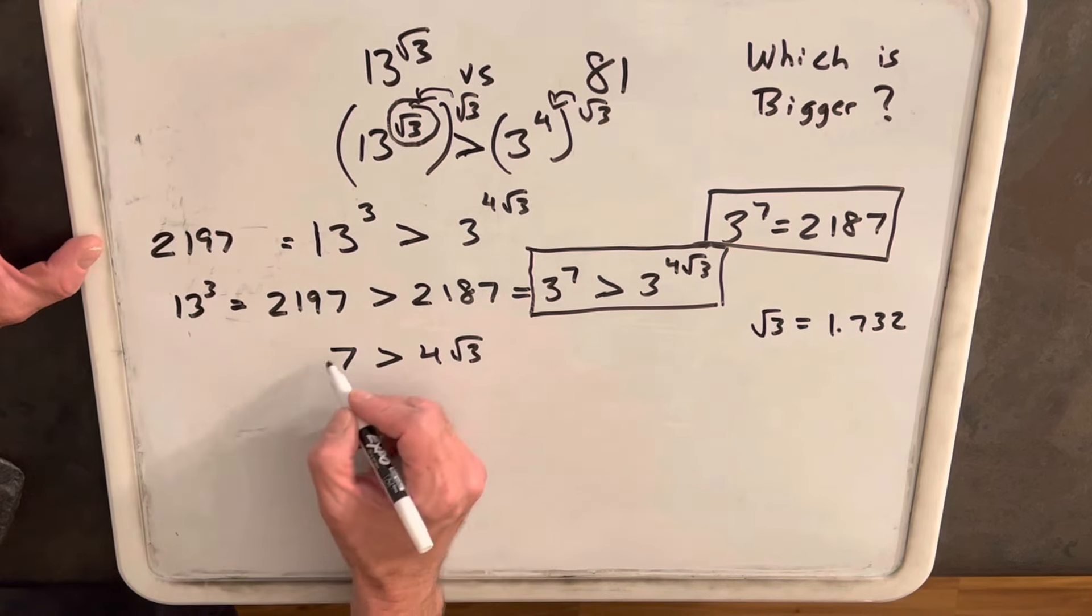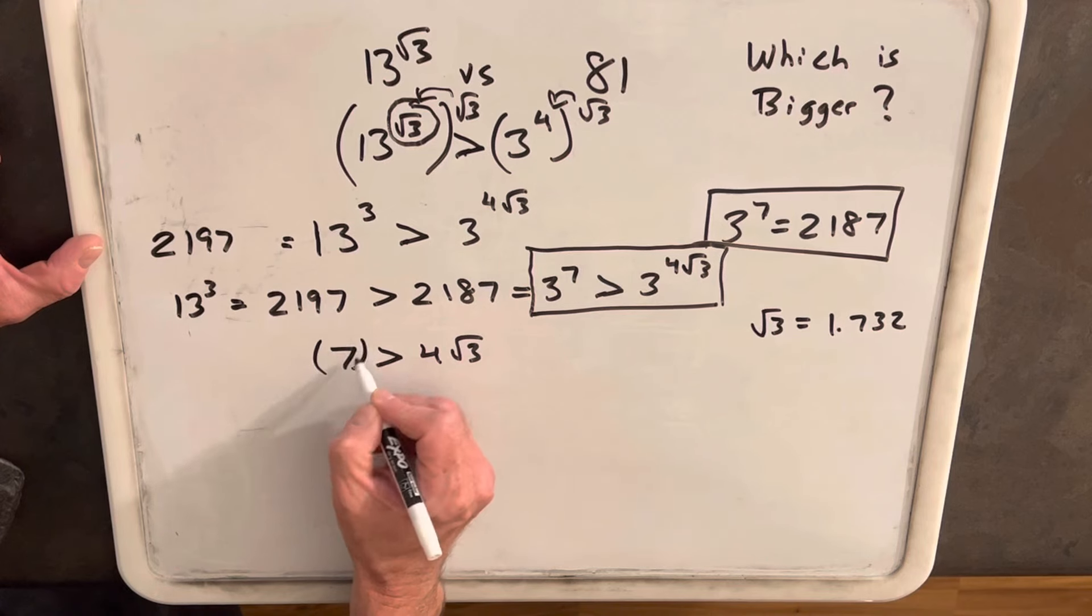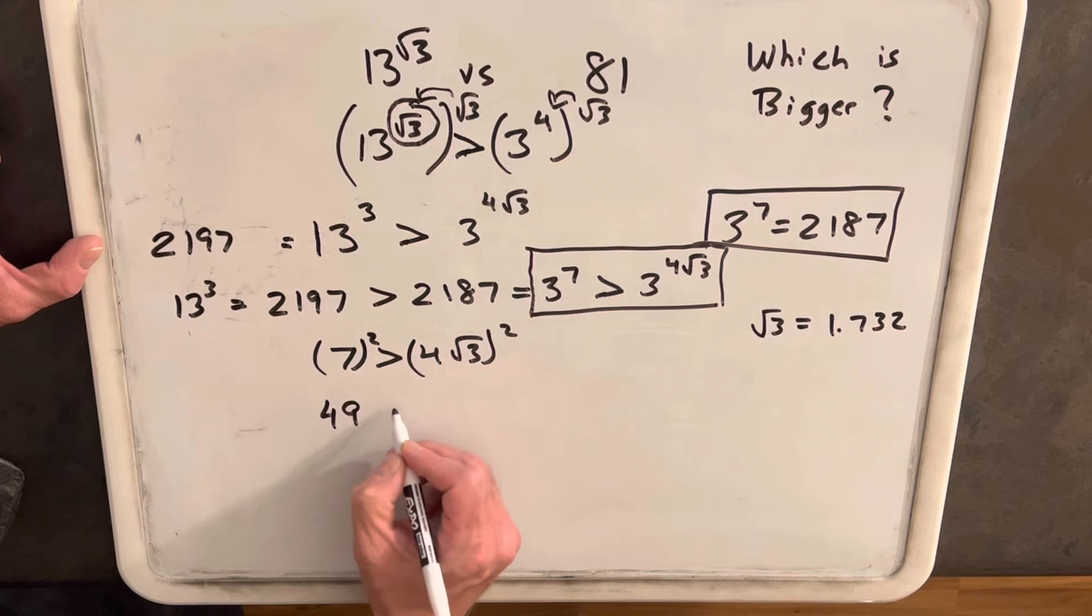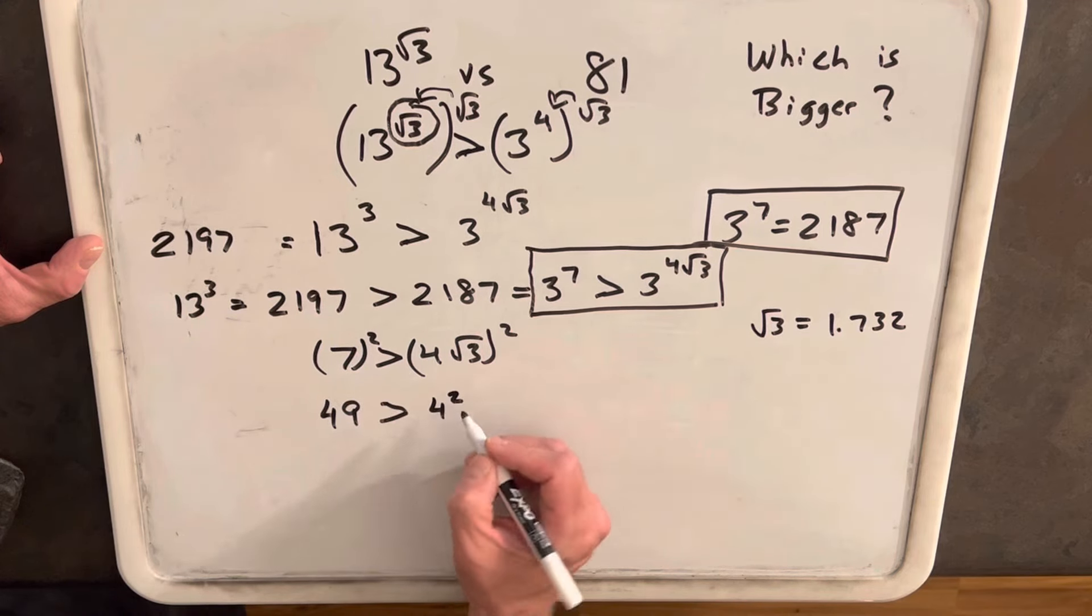The radical is making it tricky, but that's easy to handle because we can just square both sides. And then we're comparing 7 squared, which is 49, hopefully greater than 4 squared times square root of 3 squared, which is just 3.